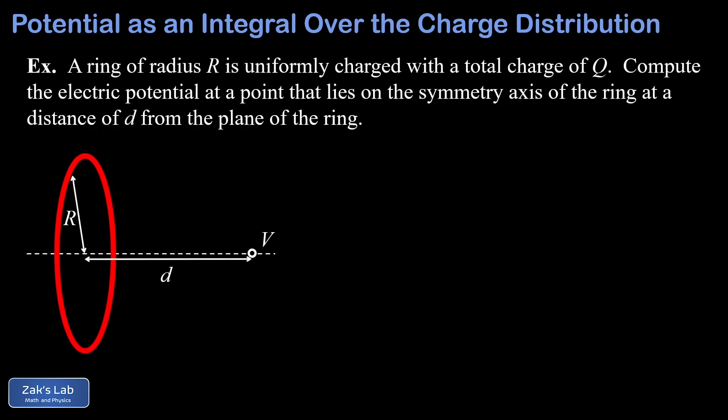In our example we're given a uniformly charged ring of radius R and total charge Q, and our observation point lies on the symmetry axis of the ring at a distance d from the plane of the ring. We start by visualizing an infinitesimal charge increment dq at a distance of little r from the observation point and a distance of big R from the center of the ring.